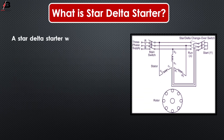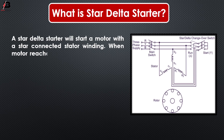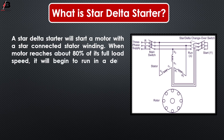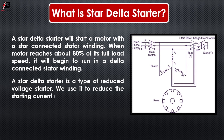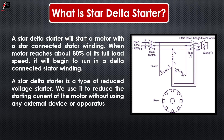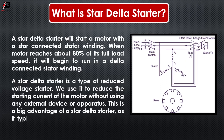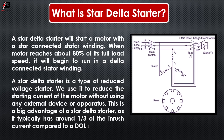A star delta starter will start a motor with a star connected stator winding. When the motor reaches about 80% of its full load speed, it will then run in a delta connected stator winding. A star delta starter is a type of reduced voltage starter. We use it to reduce the starting current of the motor without using any external device or apparatus. This gives it around 1/3 of the inrush current compared to a DOL starter.